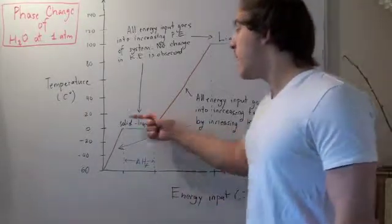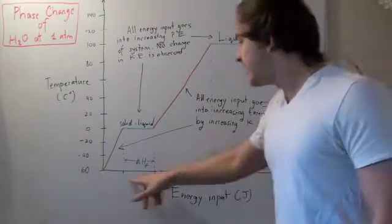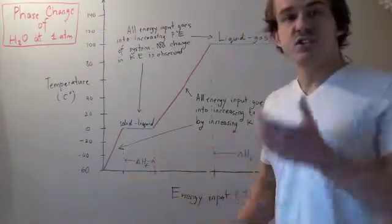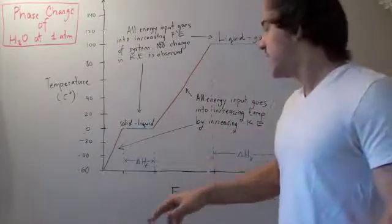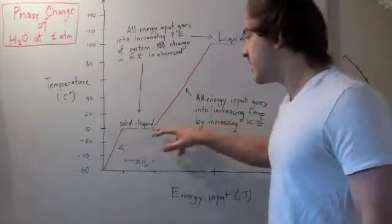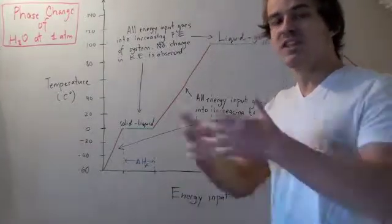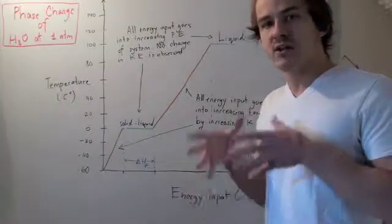Likewise, going backward or freezing is exothermic. Because we're taking this number and subtracting this number from this number. A smaller number minus a larger number gives you a negative number. That means freezing going this way is exothermic, and so it releases energy into the environment, heating the environment and cooling our system.